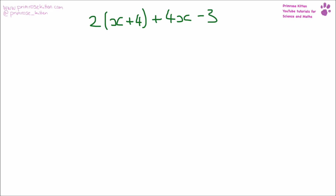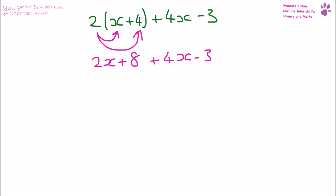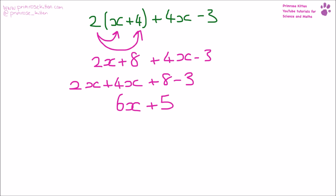Here I have two outside the brackets, so I need to times it by each term inside. That gives me 2x plus eight, plus 4x minus three. Now we collect all the x terms together: 2x plus 4x is 6x, and eight minus three is plus five.